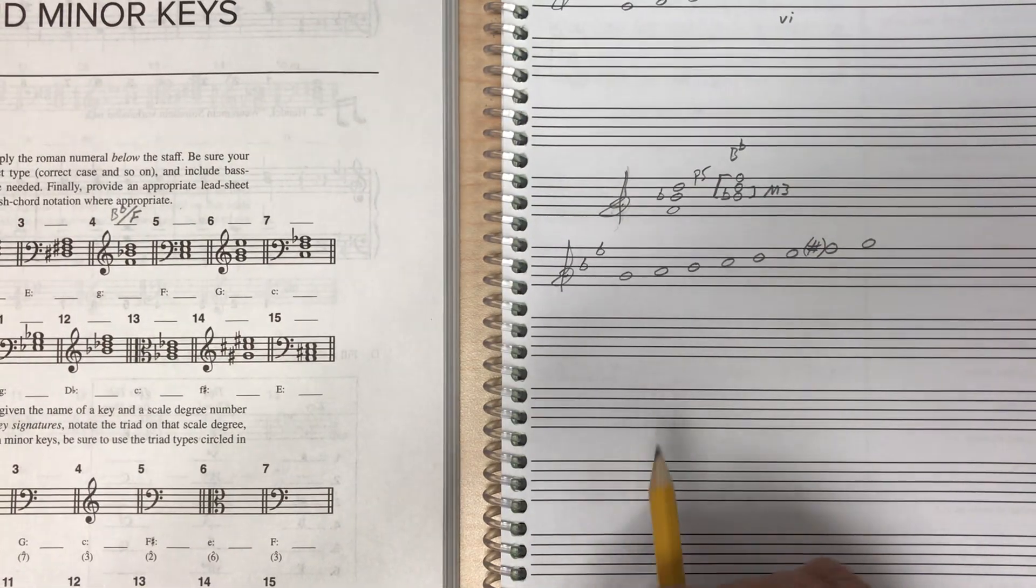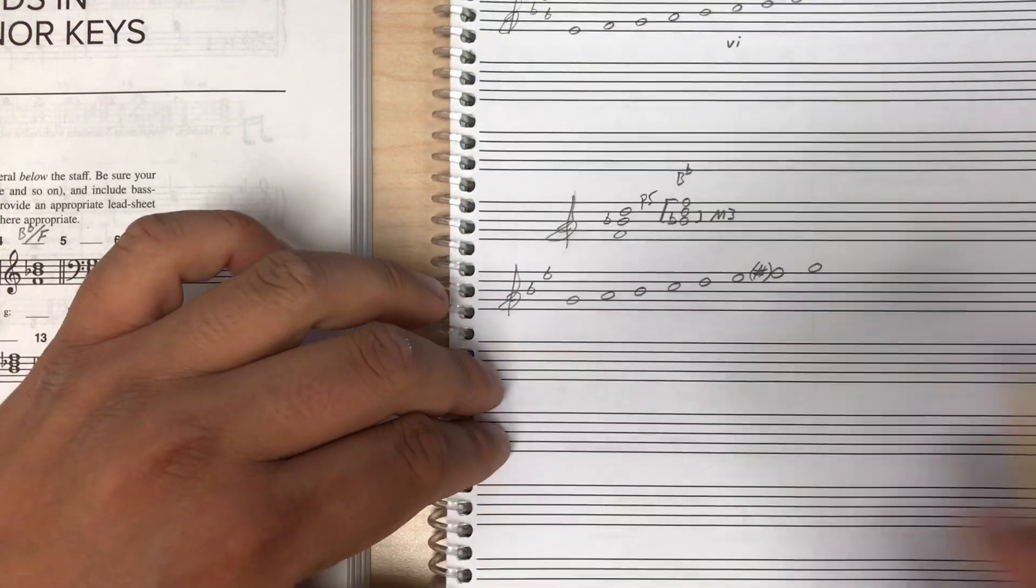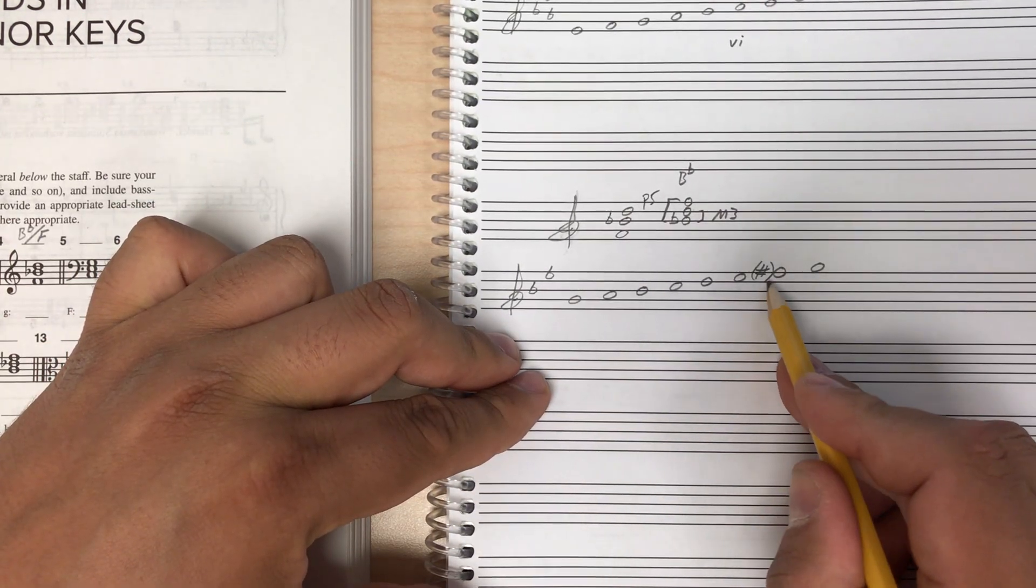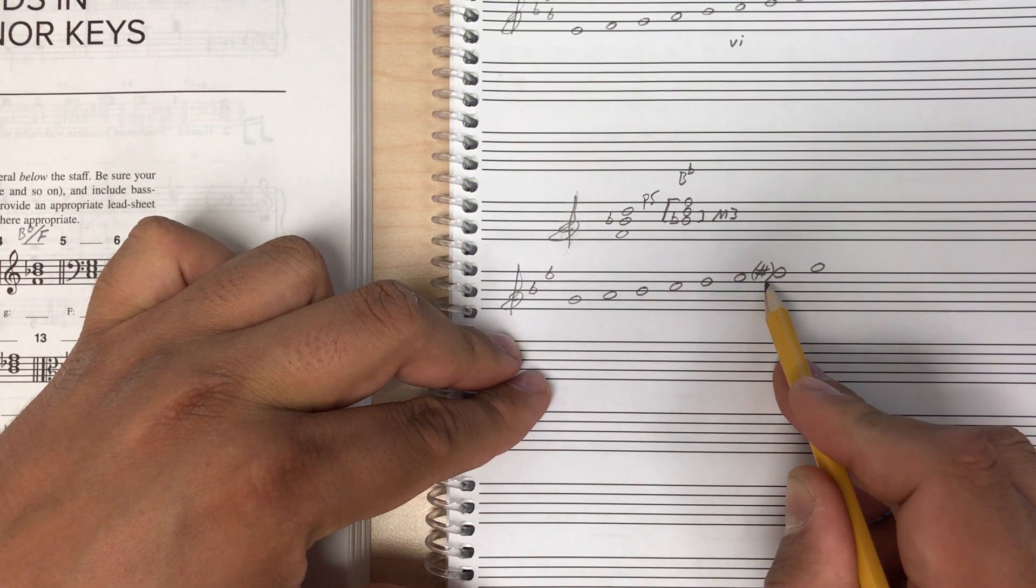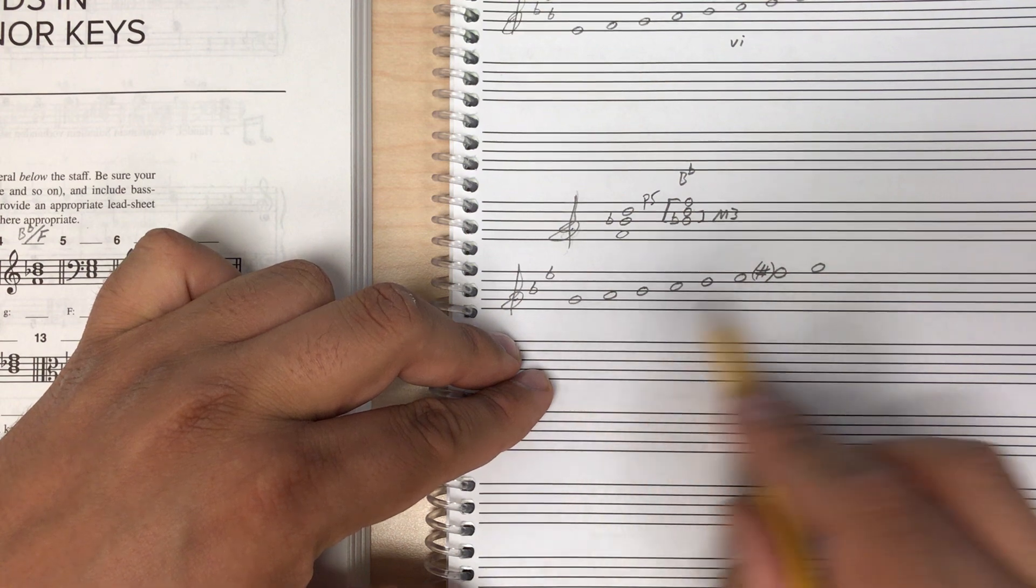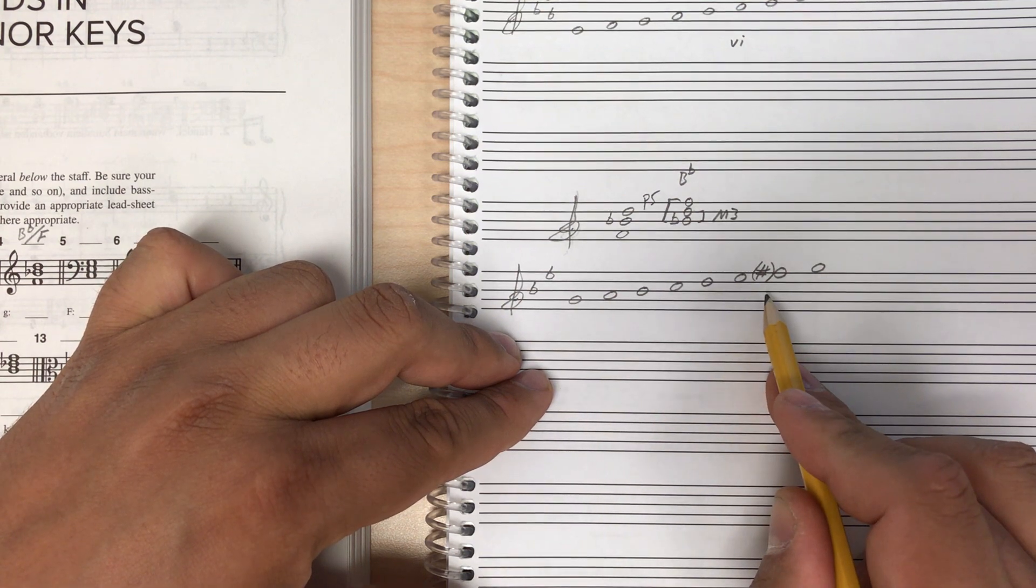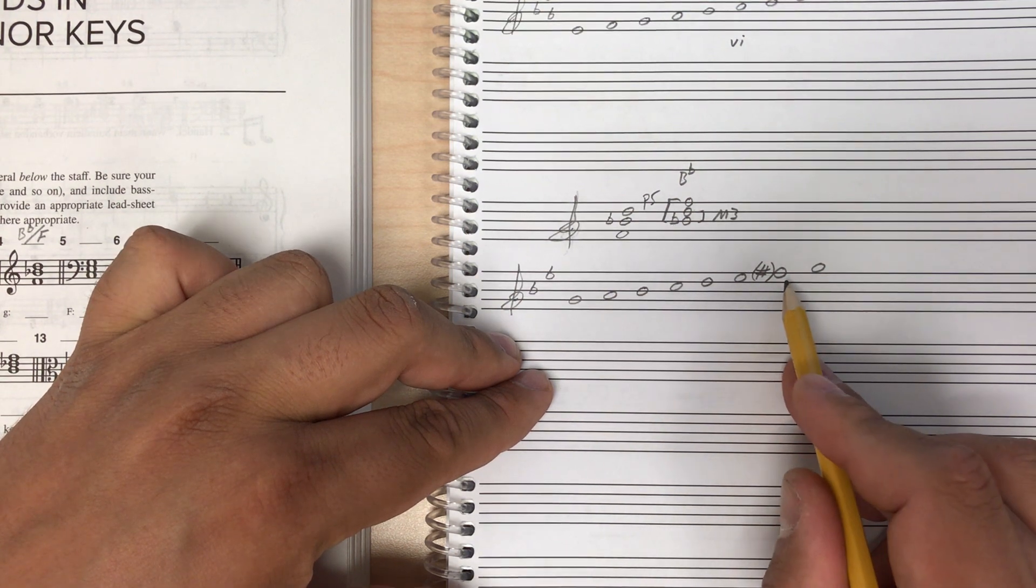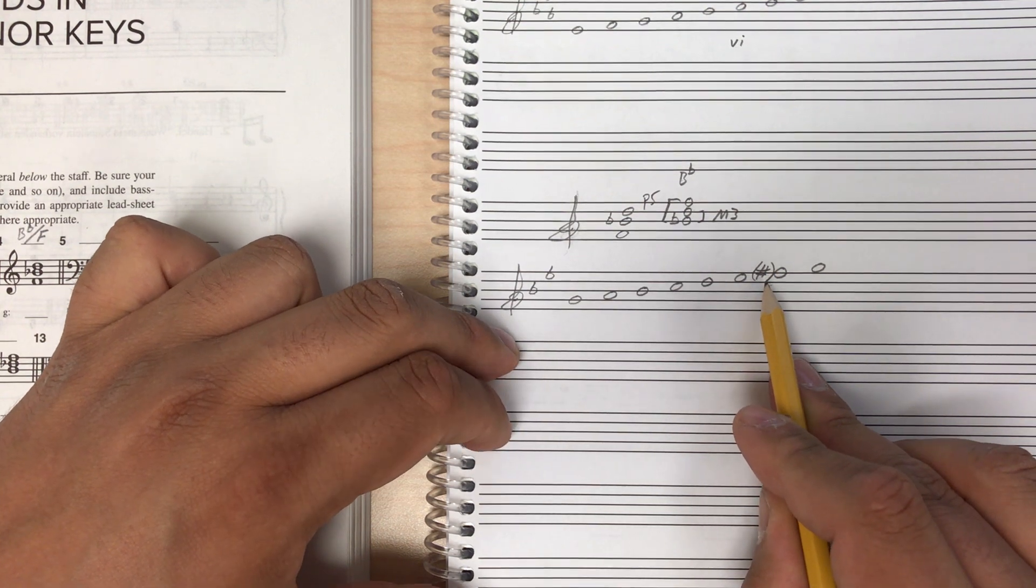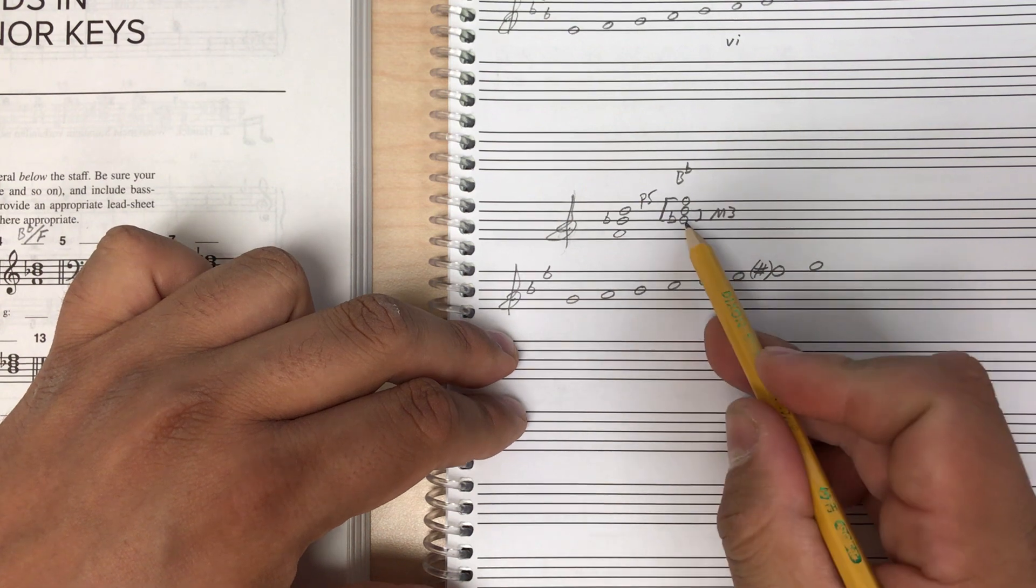So here I've written out a G minor scale. You'll notice that I have in parentheses here the sharp, because most chords in a minor key will use harmonic minor, but some might use natural minor. So some chords might have an F sharp, some chords might have an F natural, in this case in G minor. So be aware of that. But other than that, we'll do the same thing.